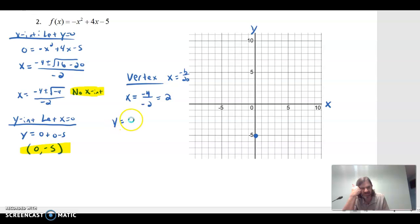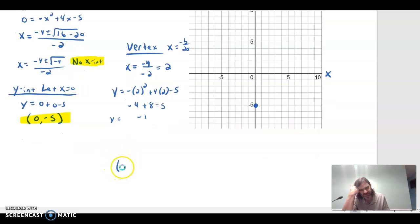So then we're going to plug 2 in. The y part of that will be negative times 2 squared plus 4 times 2 minus 5. So be careful with that. It's negative 4 plus 8 minus 5, so it looks like negative 1.